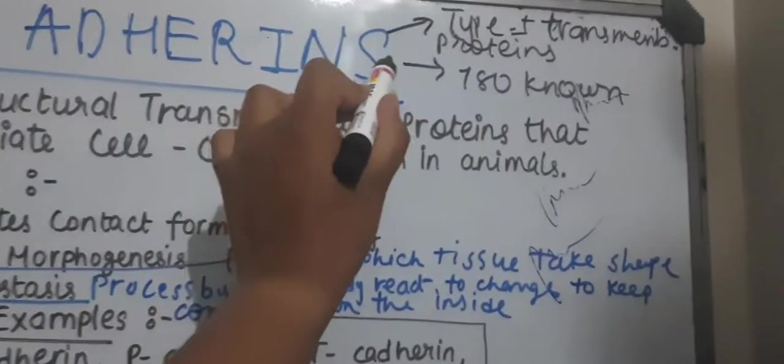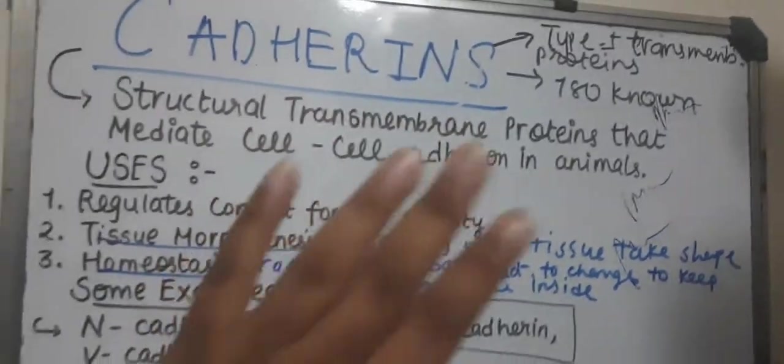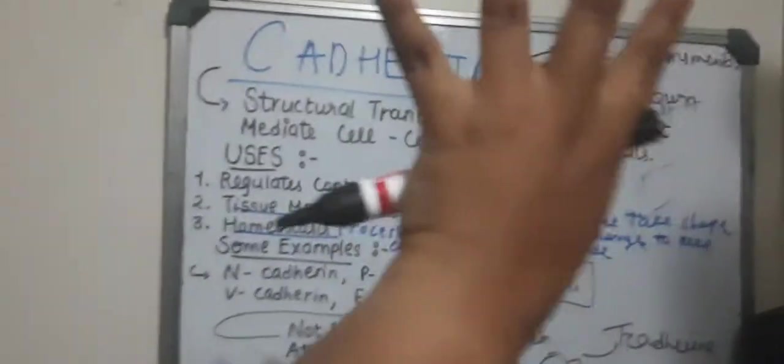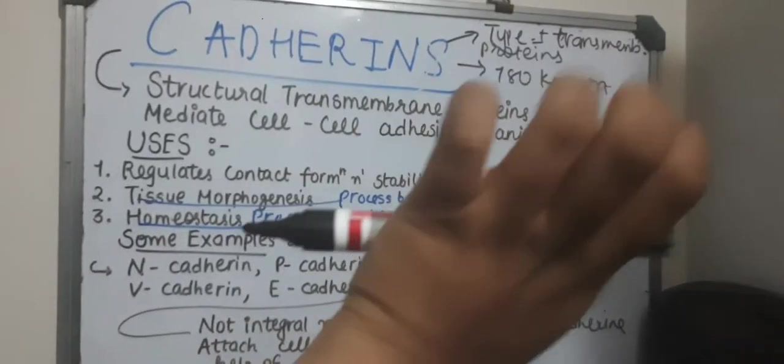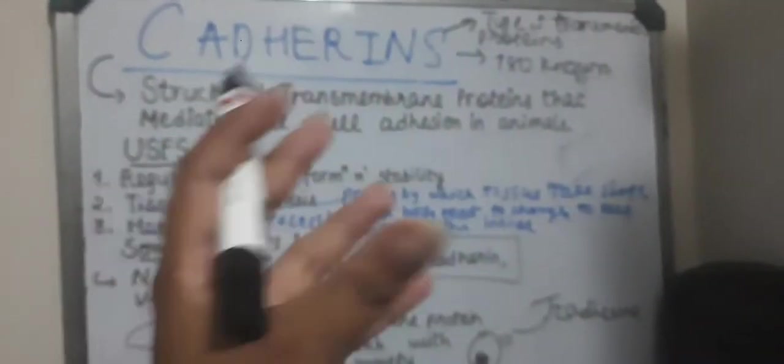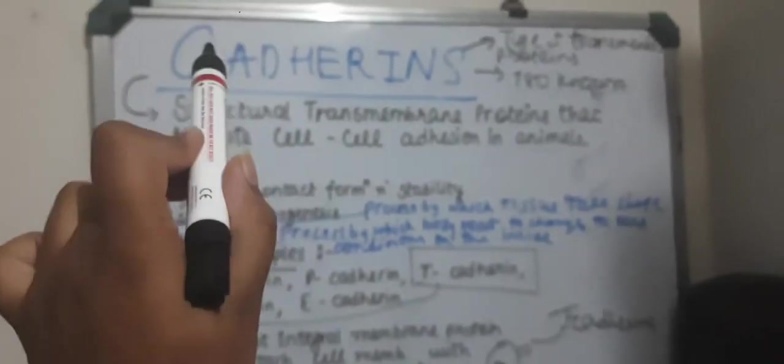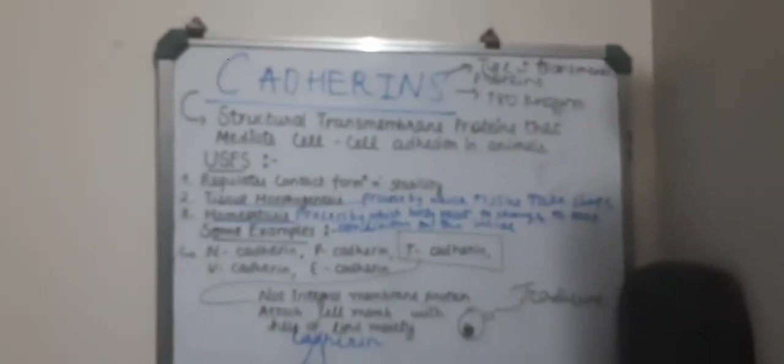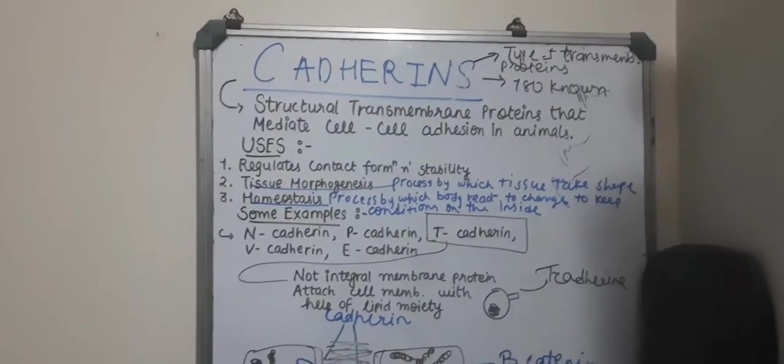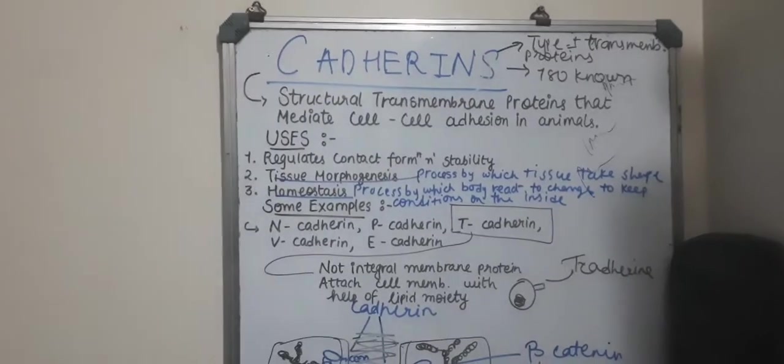Ins we usually put behind proteins, so from this word you can understand that they are proteins. Adhir means they adhere, they join, and ca means calcium.